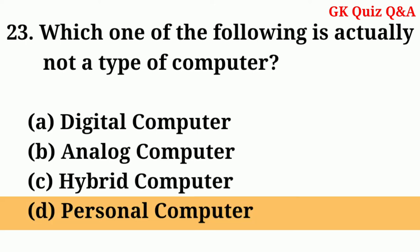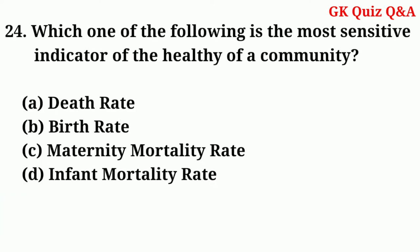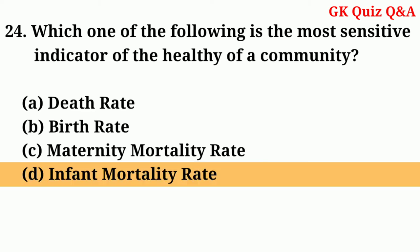Answer: D — Personal computer. Which one of the following is the most sensitive indicator of the health of a community? Answer: D — Infant mortality rate.